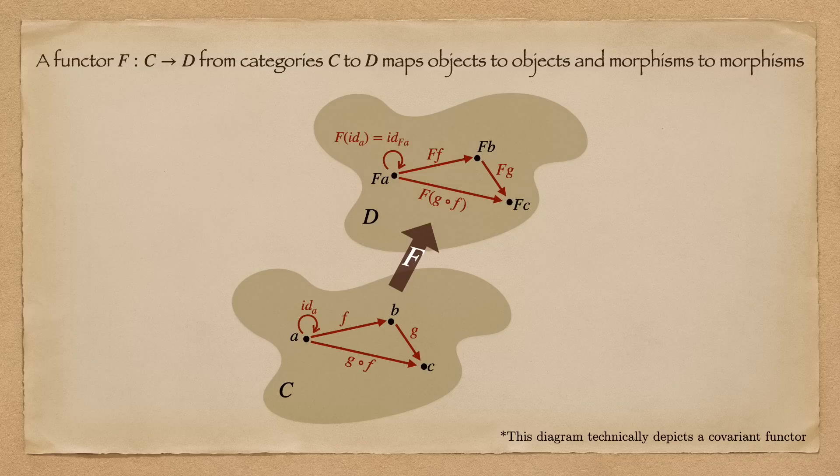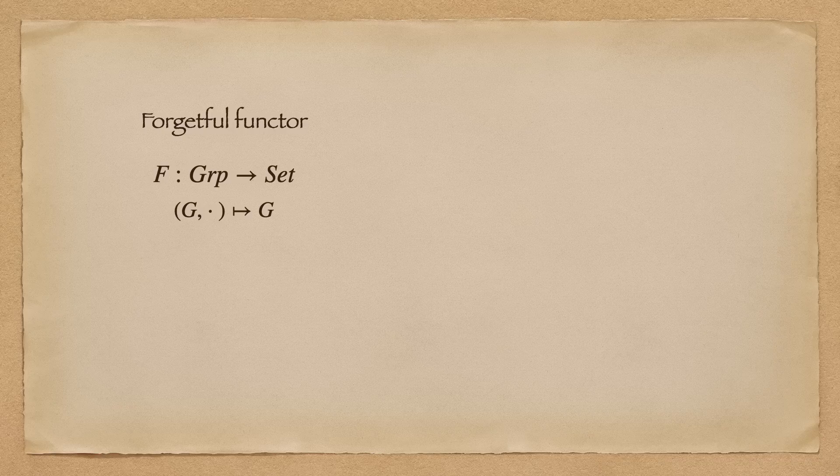An example of a functor is the forgetful functor, a functor that forgets structure. For example, F being a function from the category of group to the category of set, sends a group to its underlying set, and a group homomorphism to its underlying set map.